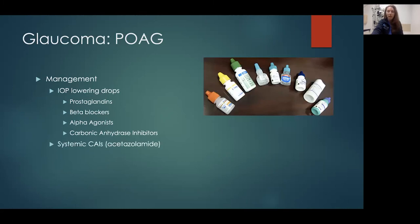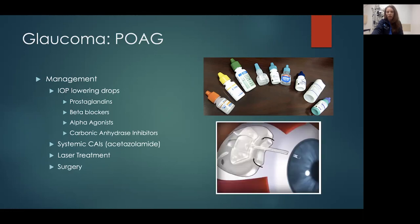If pressure is still high despite all drops, we can give oral acetazolamide — Diamox — to help, though we can't keep them on that long due to toxicity. If they're really refractory to all medications, they progress to laser treatment where we shoot lasers into the trabecular meshwork — the drain — to open that up. That's called trabeculoplasty — SLT or ALT — for open angle glaucoma. If that doesn't work, we go to surgery: putting valves in the eye, a tube shunt that leads to a valve, taking aqueous humor from the anterior chamber and allowing another route for it to drain into the suprachoroidal space.